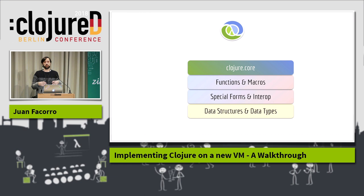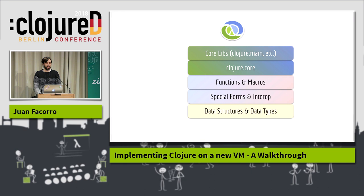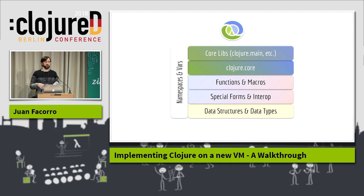Once we have all these layers, we can start building Clojure core, which bootstraps the language and has all the functions we use all the time. With Clojure core, we can get all our core libraries and on top of that all the libraries we build and use. Something very important that goes throughout all these layers is namespaces and vars — that's how we think about Clojure. In ClojureScript, namespaces and vars are not reified. In Clojure JVM, namespaces are just objects that live in memory, and vars have their own classes.